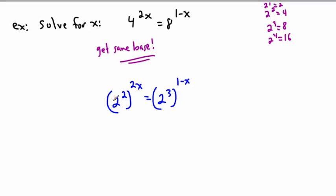Now the rest of it is a matter of using your rules of exponents. What happens if I have a base to an exponent raised to another power here? If you remember your rules, I multiply these two values. So that's going to be 2 to the power of 2 times 2x, which is 4x.